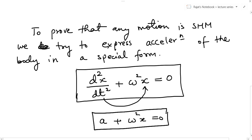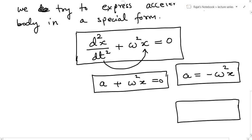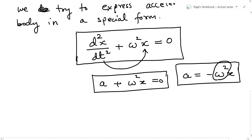What this means is that in the above problem, I have to find the acceleration of the block and prove that it is related to x — directly proportional to x — with a constant attached to it. If I am able to prove that, I can say the motion is simple harmonic motion. If acceleration turns out to be minus omega squared times x squared, that would not be simple harmonic motion.